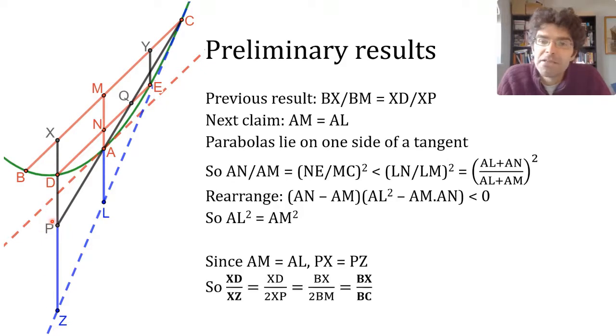And that means that a ratio like XD to XZ is just half of the kind of ratios we were looking at before. So it's equal not to BX to BM, but to BX to BC. And again, if you like, you can check that there's nothing special here about X being on the left of M.